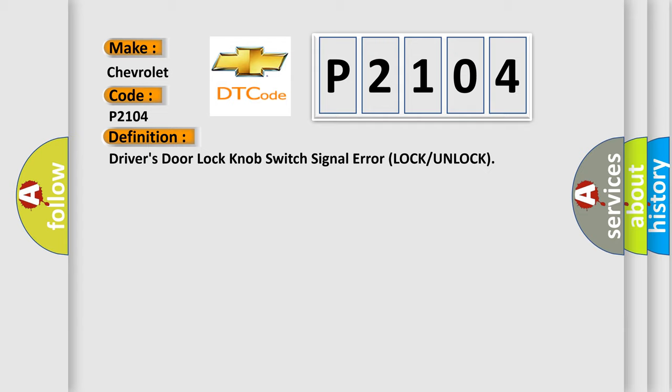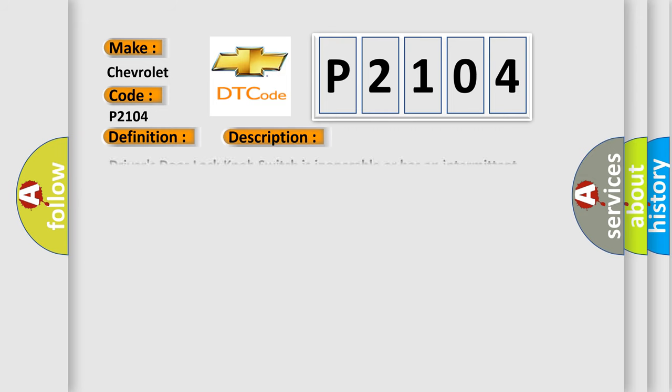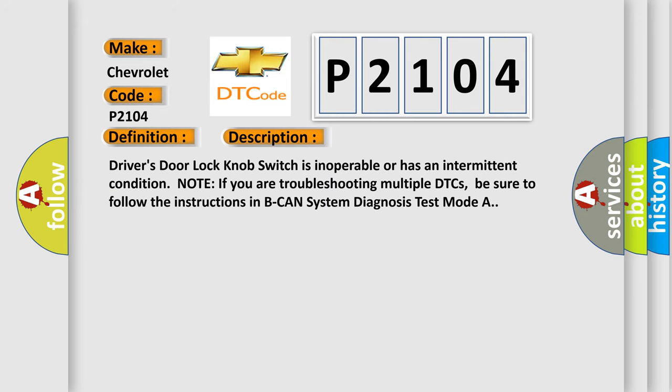And now this is a short description of this DTC code. Driver's door lock knob switch is inoperable or has an intermittent condition. Note if you are troubleshooting multiple DTCs, be sure to follow the instructions in Peak Hand System Diagnosis Test Mode A.